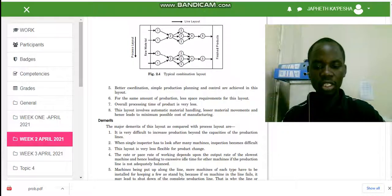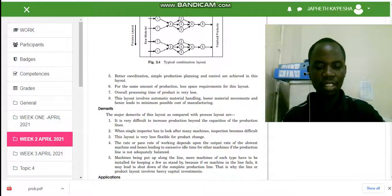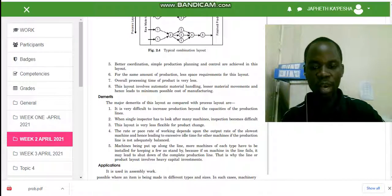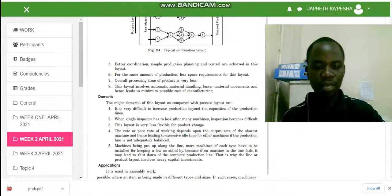If the production line is not adequately balanced, the last disadvantage is that machines being put up along the line, more machines of each type have to be installed for keeping a few as standby. Because if one machine in the line fails, it may lead to shutdown of the complete production line. That is why the line or product layout involves heavy capital investment.